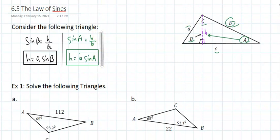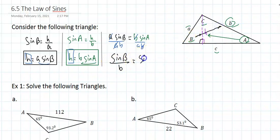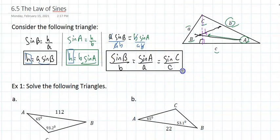Since I know that the height is the same, then A times the sine of B must equal B times the sine of A. And if I divide both sides by AB — since those are sides of a triangle and cannot be zero — I will get the sine of angle beta over side B equals the sine of angle A over the opposite side A.